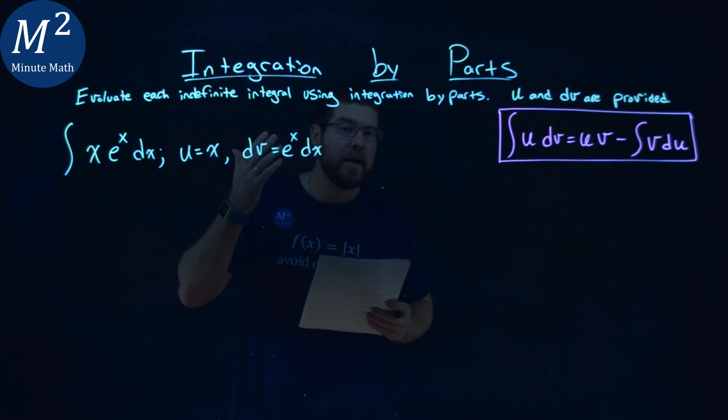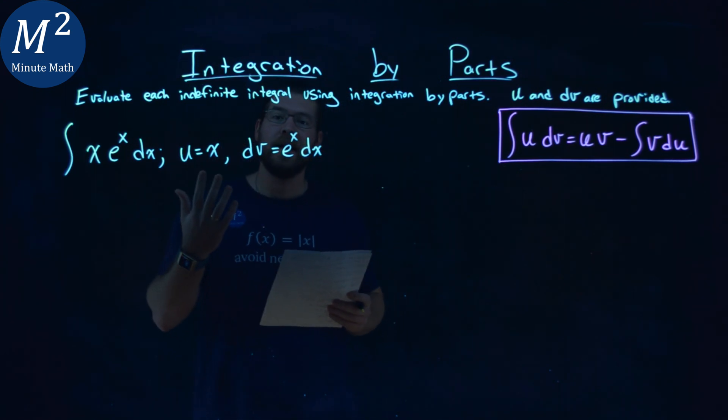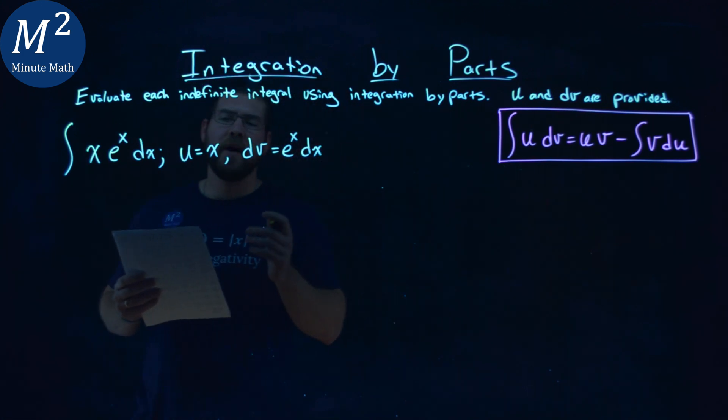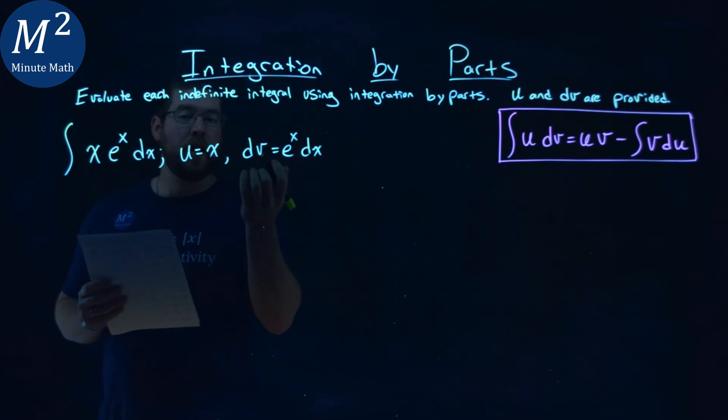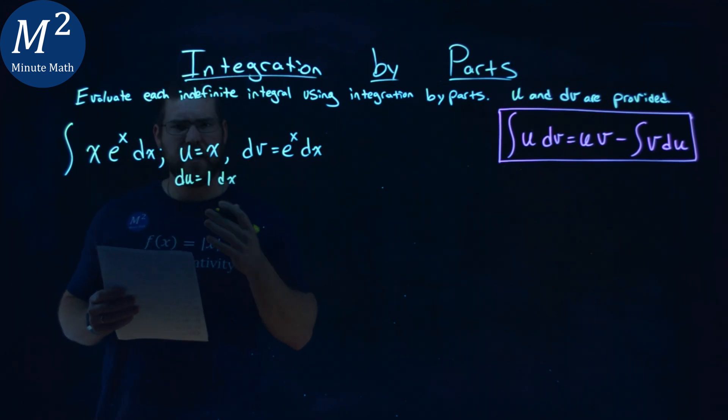Now, one thing that's nice, they already gave us our u and dv, so we need to find our du and v. So to find our du, we want to take the derivative of u, right? The derivative of x is just going to be 1 dx, pretty easy.